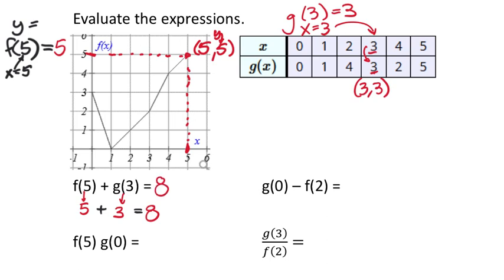Now I'm ready to go to the next problem. I have g of 0 minus f of 2. So once again, I'm just going to start with g of 0. So I say, what is g of 0? Well, g of 0 is here, because this tells us the x value is 0. And it's telling us then to find the corresponding y value, which is 0. So g of 0 is 0.